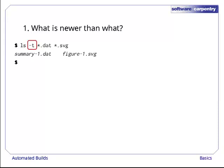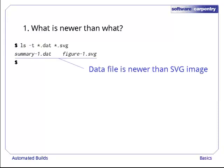The dash t flag to ls tells it to list things by age with the youngest file first and the oldest last. This listing tells us that our data file, summary1.dat, is newer than the svg file that depends on it, so the svg file needs to be recreated.